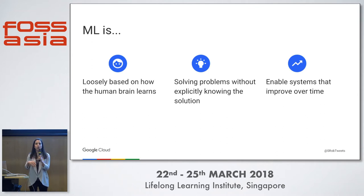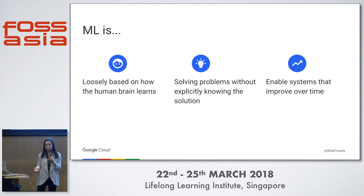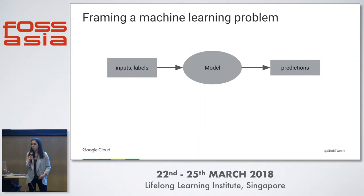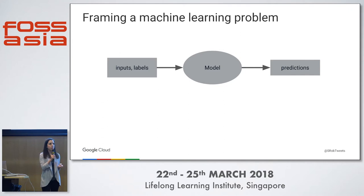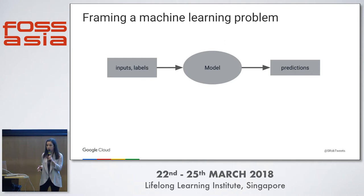Instead of biological neurons, we have mathematical neurons that mimic the way neurons in our brain work. Machine learning lets us solve problems without knowing exactly what the solution might be, and it enables systems that improve over time as they're given more and more data. I'm going to focus on supervised learning, which means you provide a labeled data set to train your model. We give labeled inputs to our model, and then our model outputs a prediction based on those inputs. The amount you know about how your model works under the hood depends on the tool you choose to use.